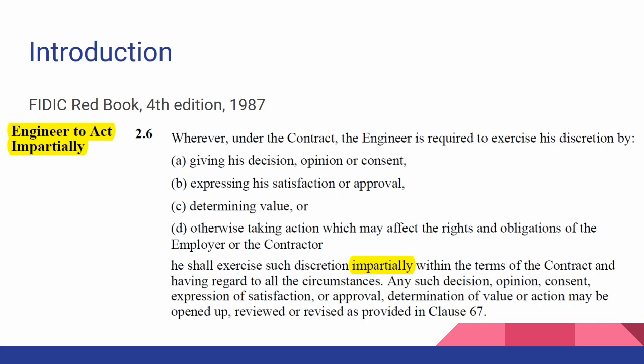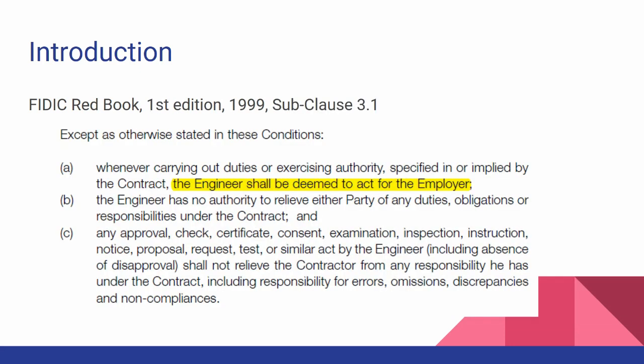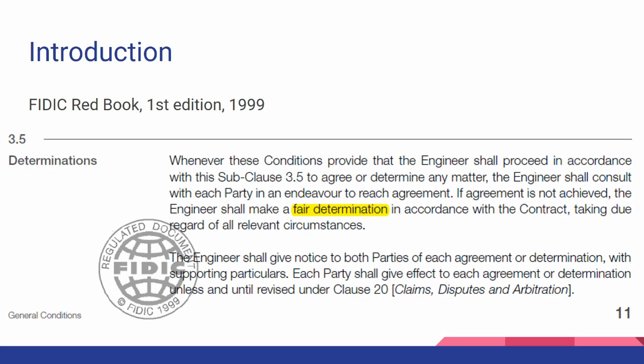There were a lot of disputes and engineers not discharging this obligation properly because of this conflict of interest. That's why in 1999 — the last time you see the word 'impartial' in the contract to this date — that clause was removed. In clause 3.1 it is clear the engineer acts on behalf of the employer, however in clause 3.5 the engineer has a duty to render fair determinations. The word 'fair' also appears in processing payment certificates.